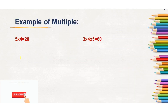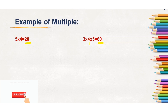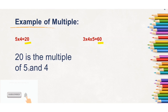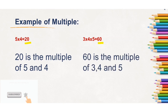Look at the example shown here. 5 by 4 is 20, so 20 is the multiple of 5 and 4. Here, 3 into 4 into 5 is 60, so 60 is the multiple of 3, 4 and 5. And 20 is the multiple of 4 and 5, and 60 is the multiple of 3, 4 and 5.